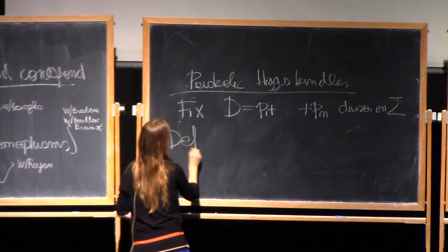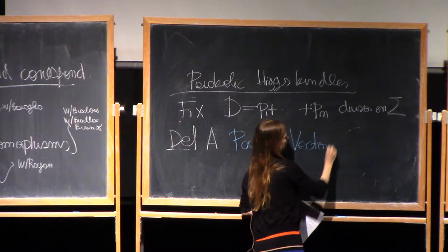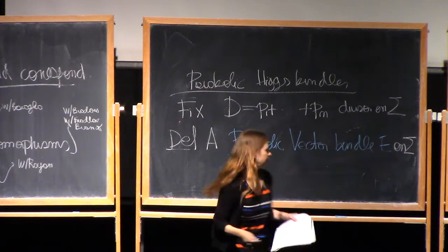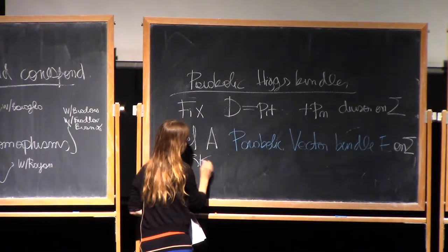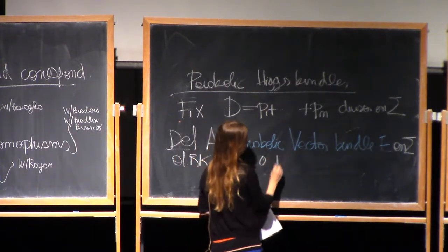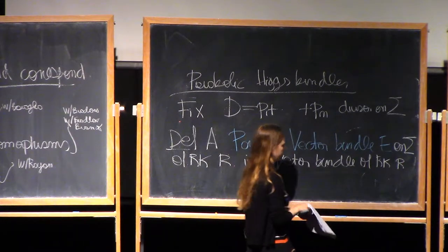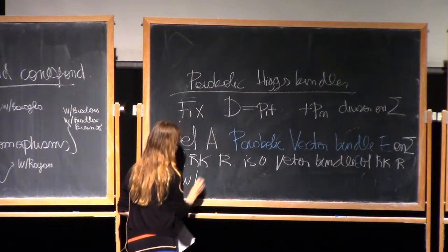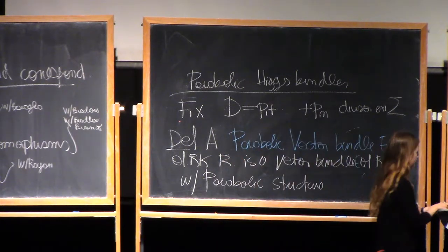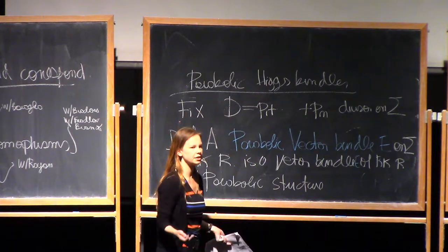A parabolic vector bundle E on Σ is a vector bundle of rank R with parabolic structure. The parabolic structure is defined by looking at a flag for the vector bundle and a set of weights that go with that flag.